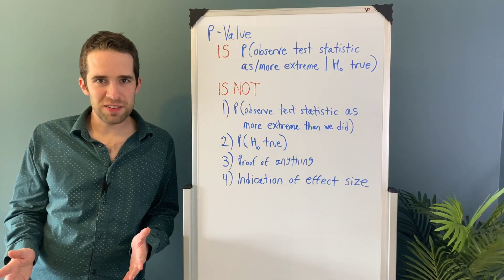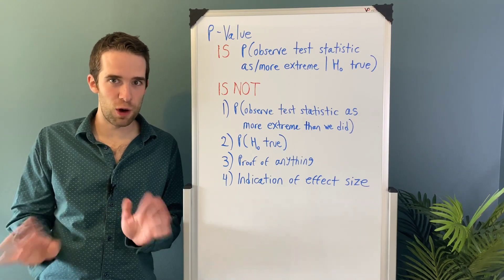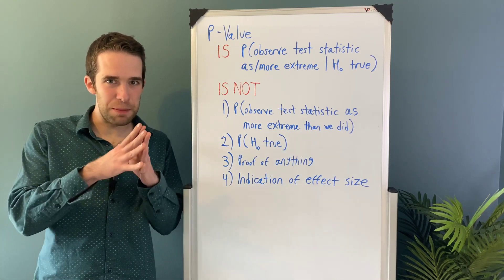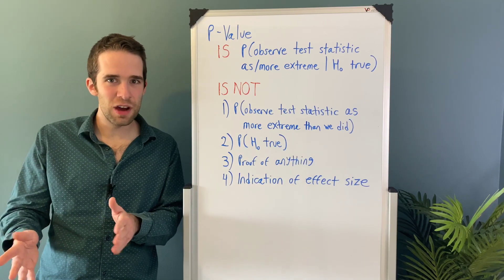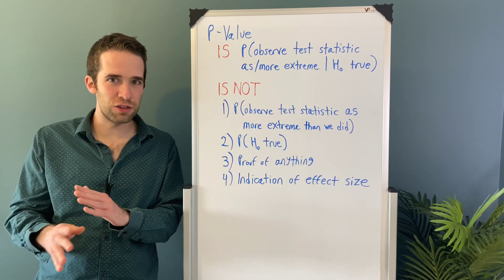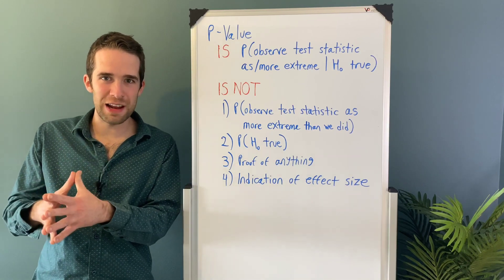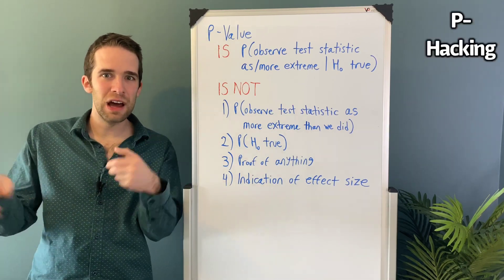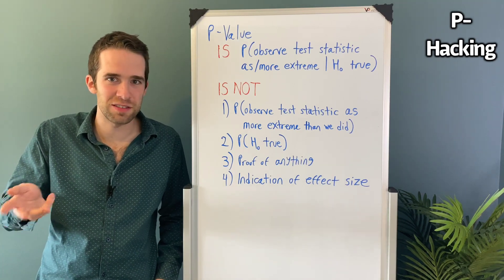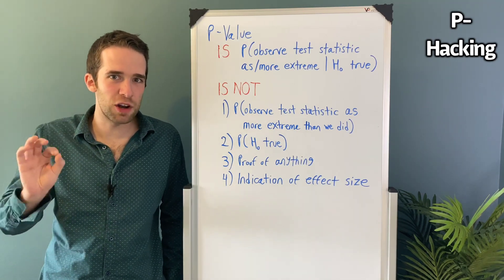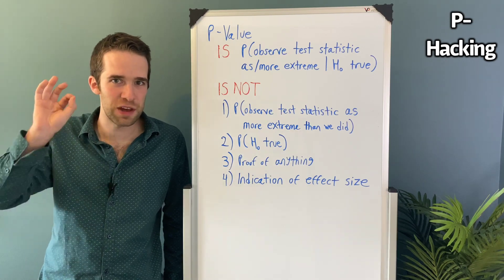Now the third misconception of p-values — and this is possibly the most egregious of all of them — is thinking that a p-value proves anything. We're going to look at this super popular XKCD comic, and it's going to illustrate an idea called p-hacking. This is typically when you perform a whole bunch of statistical tests in hope that one is going to come out which returns a statistically significant p-value.